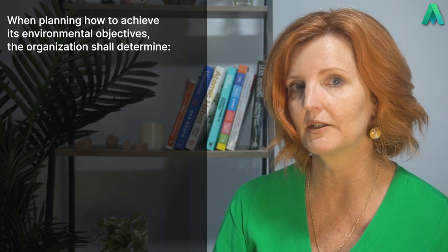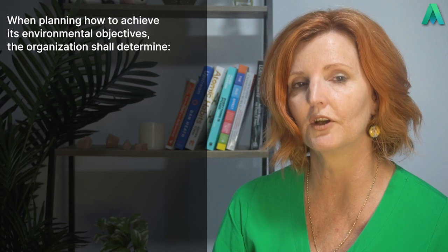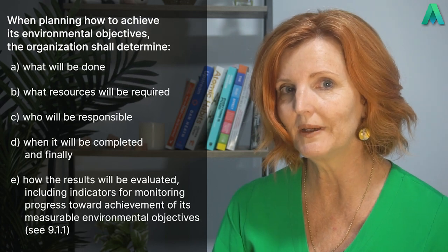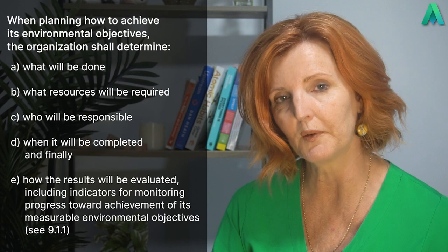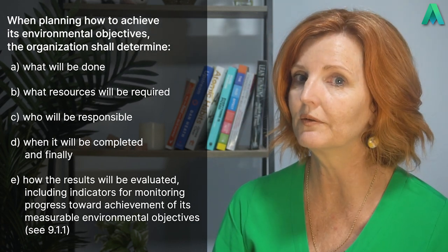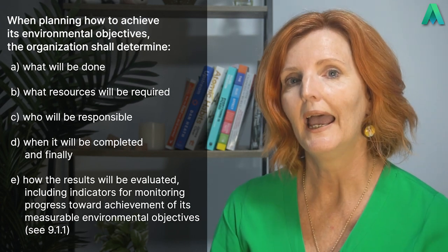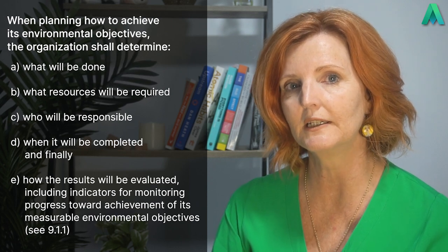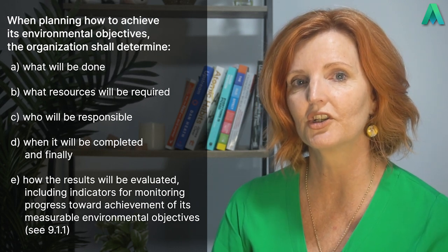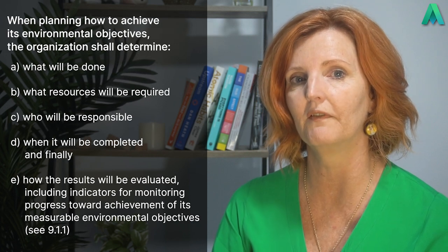Now it's time to figure out how these objectives can be achieved. This is where Sub-Clause 6.2.2, planning actions to achieve environmental objectives, comes into play. This sub-clause states that when planning how to achieve its environmental objectives, the organisation shall determine: A, what will be done; B, what resources will be required; C, who will be responsible; D, when it will be completed; and finally E, how the results will be evaluated, including indicators for monitoring progress toward achievement of its measurable environmental objectives. Take a look at 9.1.1 for that.